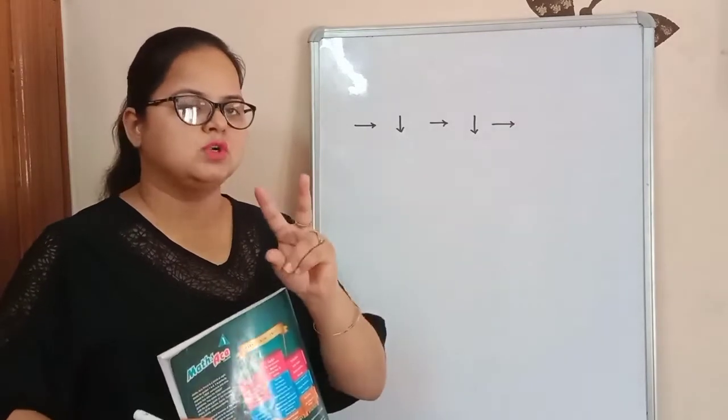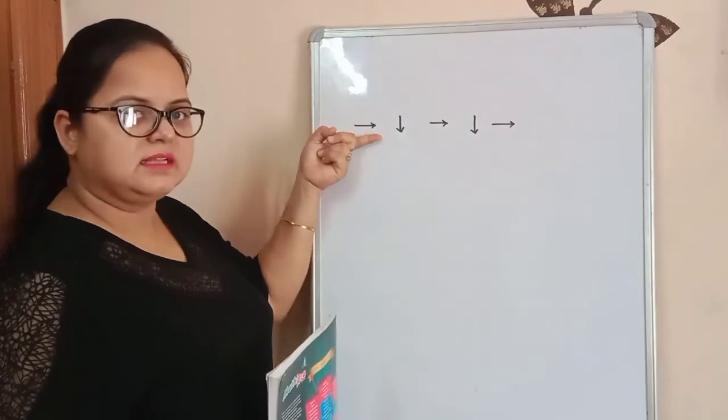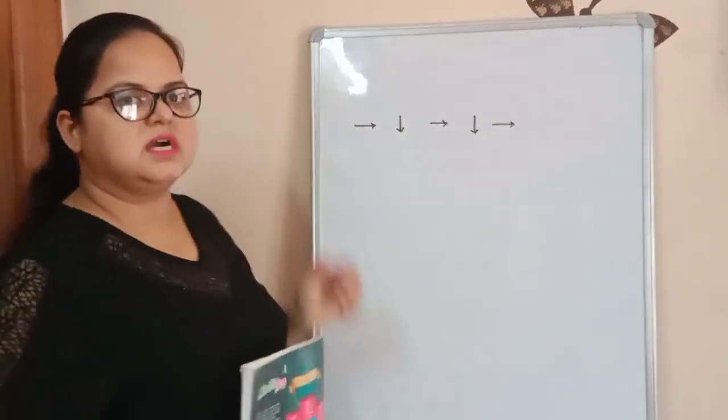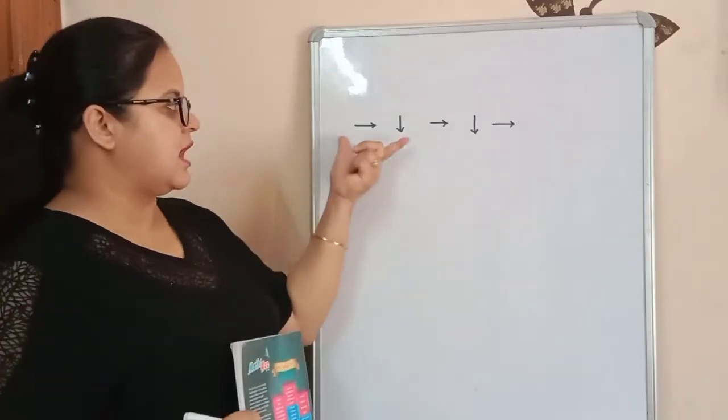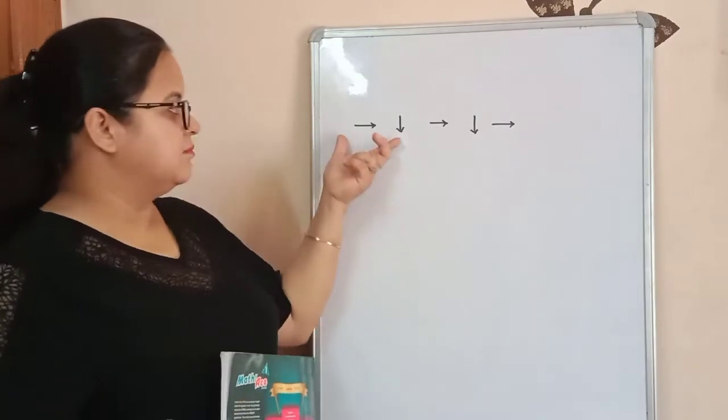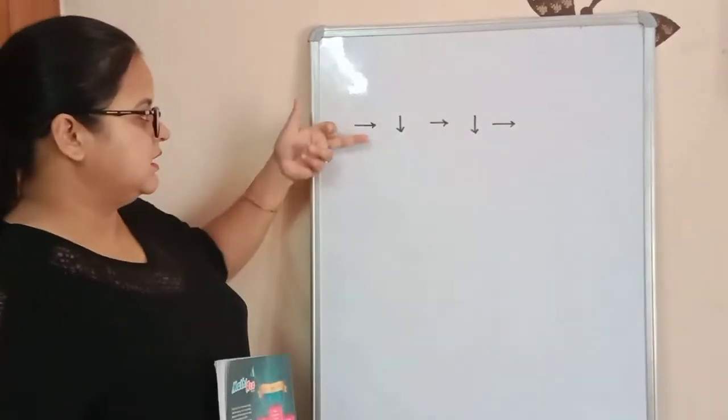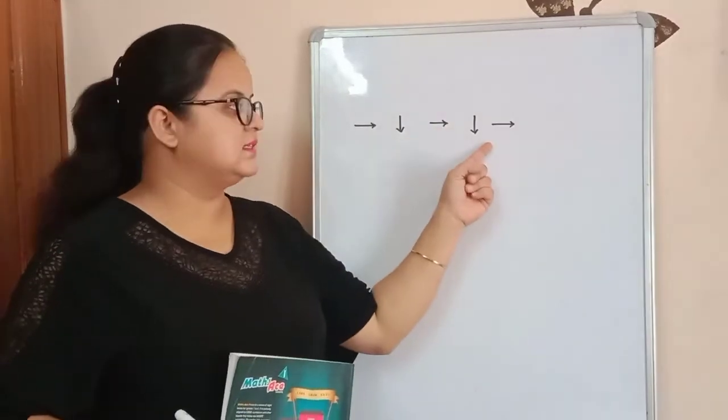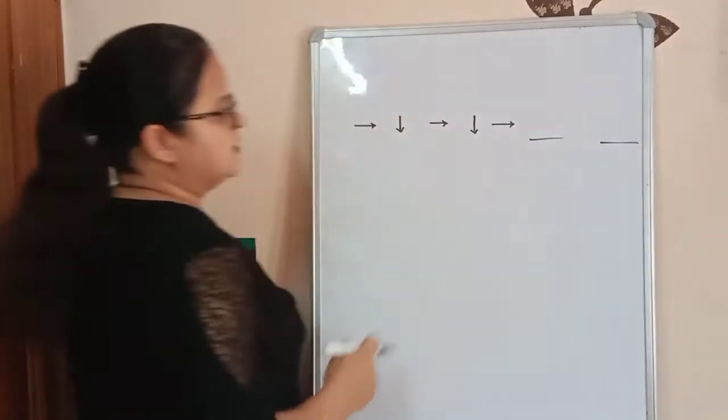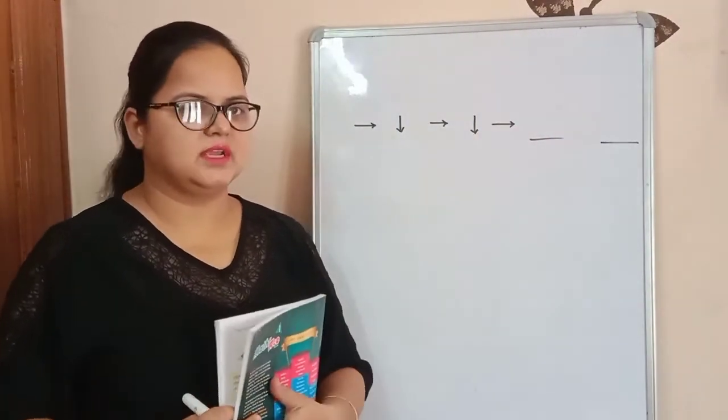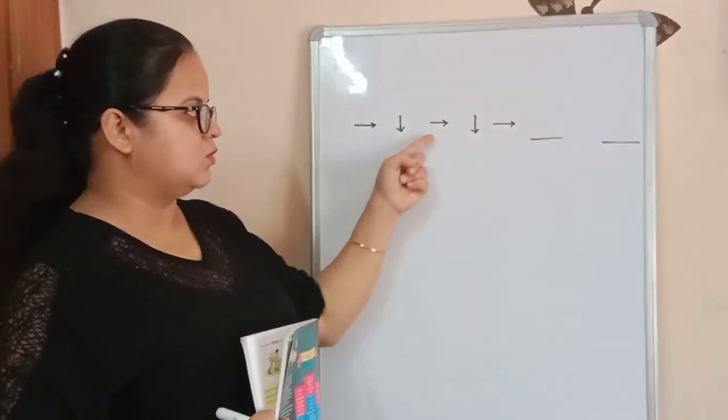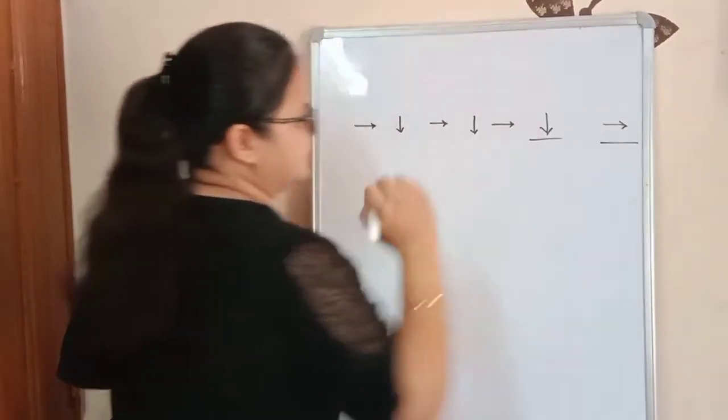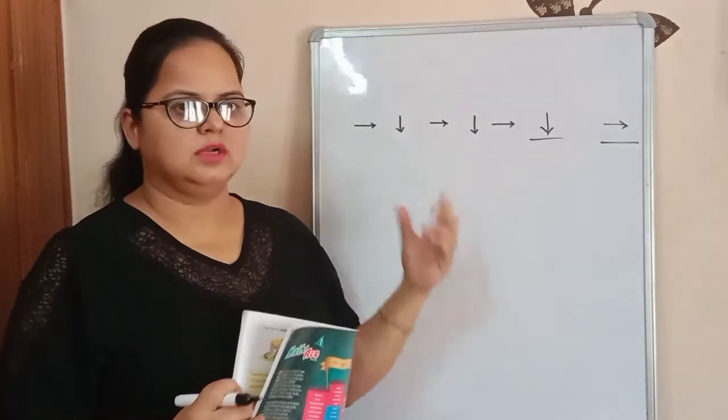See on the board. This is a pattern. Here are two types of arrows. One is pointed to the right direction and one arrow is pointed to the down direction. We have two kinds of arrows and both are arranged in sequence. Right, down, right, down, right. And here if we have a blank, which arrow will we draw? Right, down, right, down, right. We will make an arrow with down direction and then right. This is called pattern.